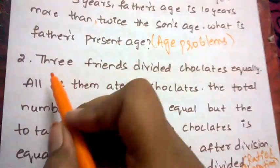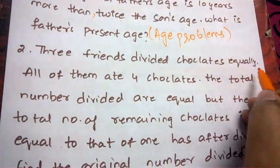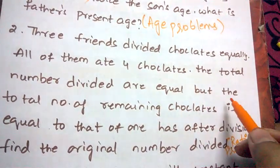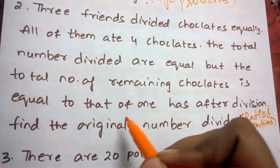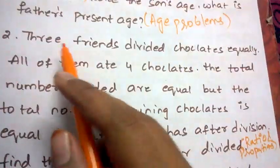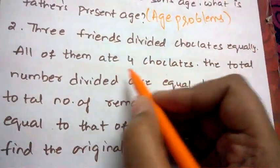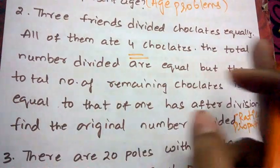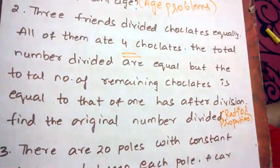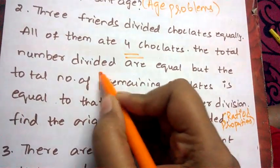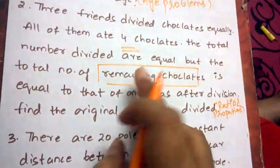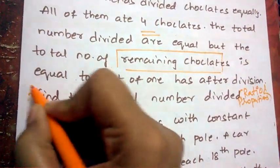I'll explain the question: There are three friends and they divided the chocolates equally. All of them ate four chocolates. The remaining chocolates are equal to the number one friend has after division. Let the remaining chocolates be x.